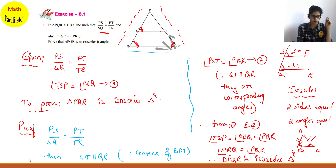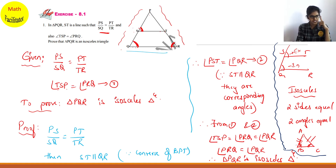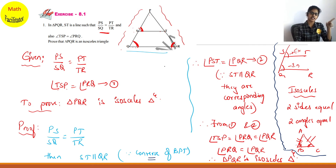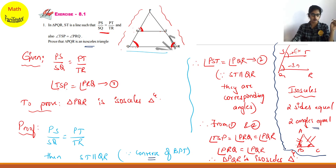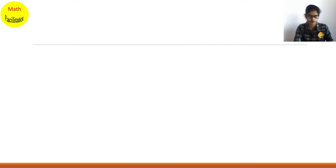Always look at the given conditions and use properties accordingly. Here the two sides are in the same ratio, so you use the converse of BPT to show the lines are parallel. When parallel, you get corresponding angles. Since you need to prove it's isosceles, you prove two angles equal. Practice this problem one more time.